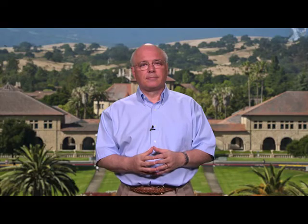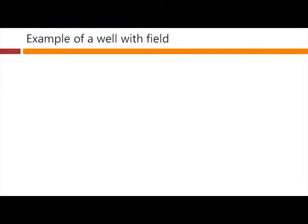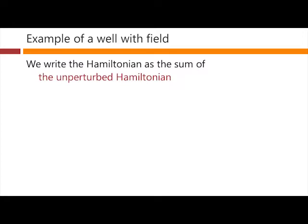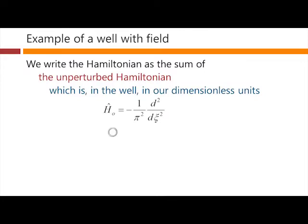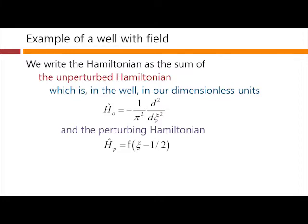So let's now apply our perturbation theory to our example problem of an electron in a potential well with an applied electric field. We write our Hamiltonian as the sum of the unperturbed Hamiltonian, which inside the well in our dimensionless units was very simple, plus the perturbing Hamiltonian, which was our linearly varying potential that resulted from the field here in dimensionless units. So that rose steadily from one side of the well to the other with position ξ.